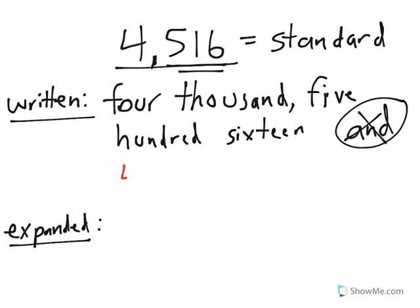Expanded form, what we do is we start with the number 4,516 and we go place by place. The first place is a 4 in the thousands place. So, that has a value of 4,000.